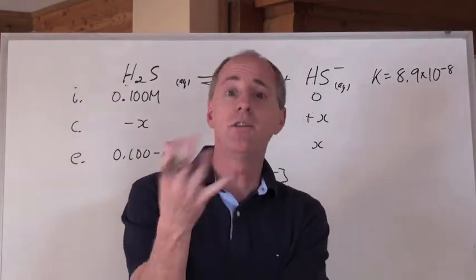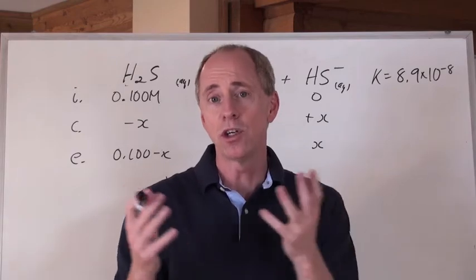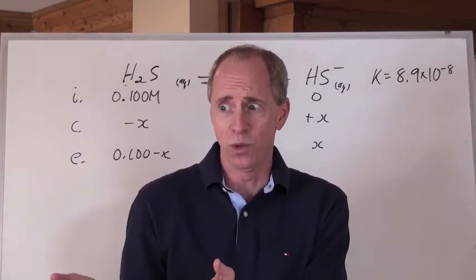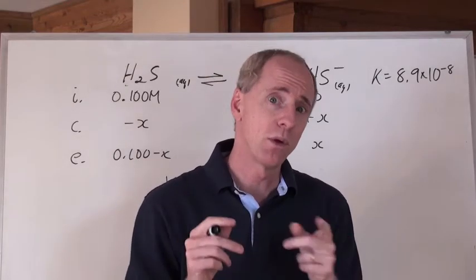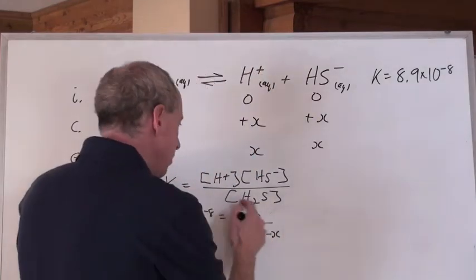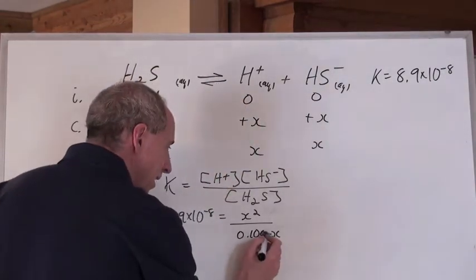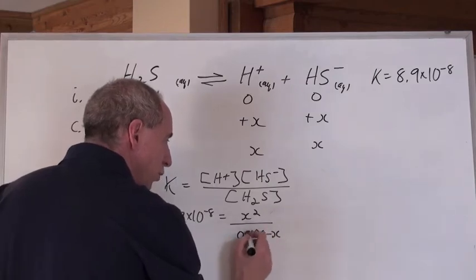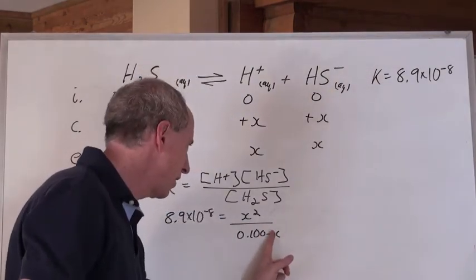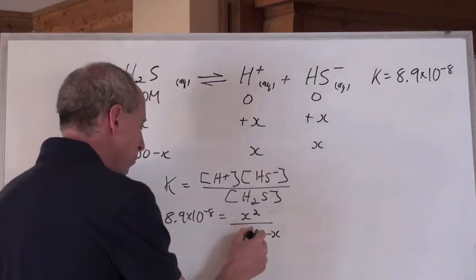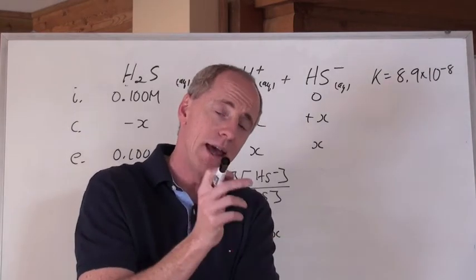Did you notice in the last question that X ended up being such a small number that when we took it away from the original concentration, we didn't get a change in concentration to anything significant digit-wise? If that's the case here too, X is so small that when you subtract it from 0.1, you still get 0.1 to two or three significant digits. So really, this X term we can just not worry about, then we can do the math by multiplying and taking the square root to get X. No quadratic. Can you really do that? Yeah, here's the rule.